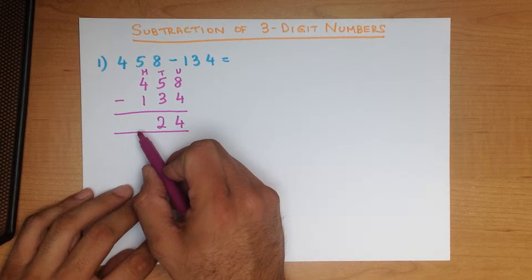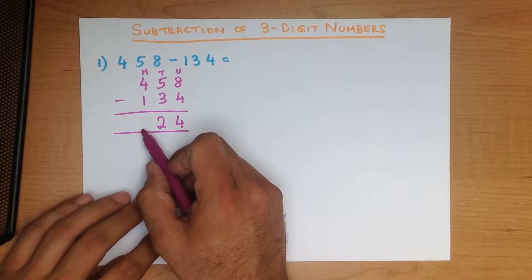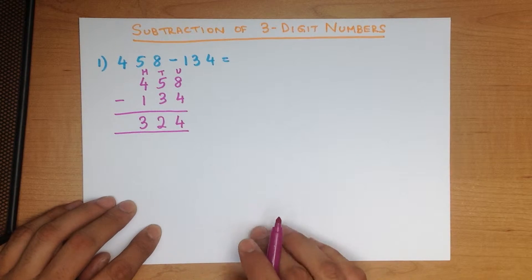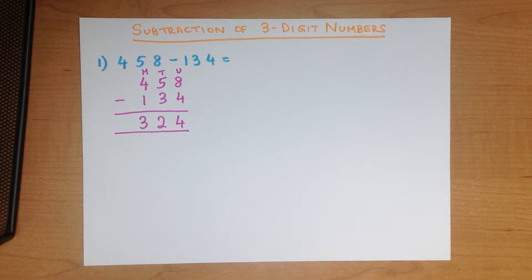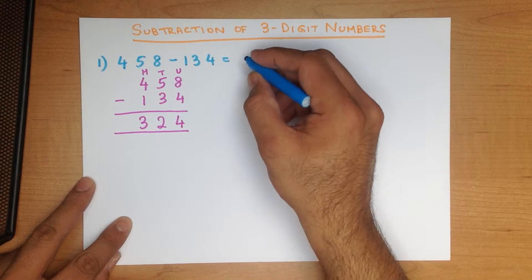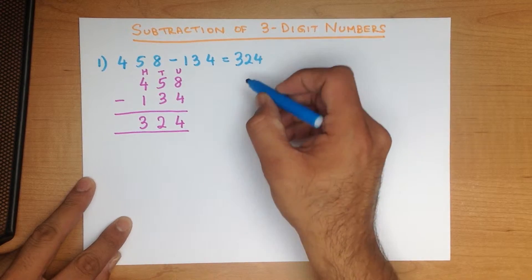And lastly, the hundreds column. What is 4 minus 1? That's a nice easy one — 3. And we have our answer: 458 minus 134 is 324.